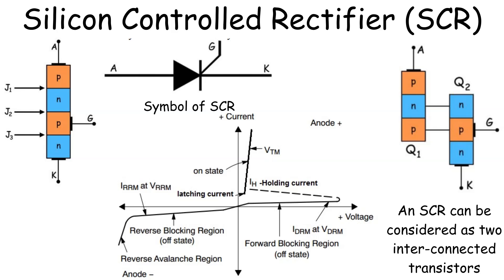SCR Structure. To the left, we see the structure of the SCR, showing the four-layer configuration, P-N-P-N. There are three junctions within the device, labeled as J1, J2, and J3. When the anode is positive with respect to the cathode, the junctions J1 and J3 become forward biased, but the middle junction J2 is reverse biased. This setup keeps the SCR in its OFF state until we apply a small gate current.